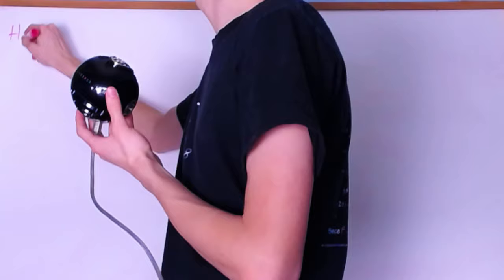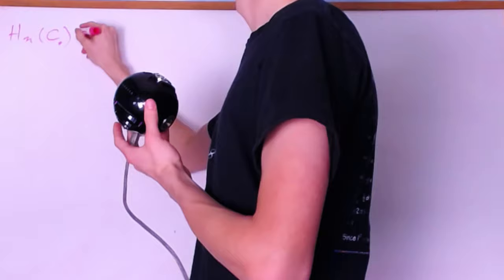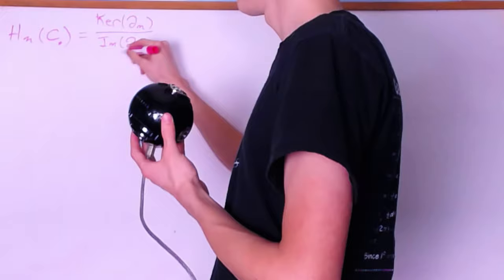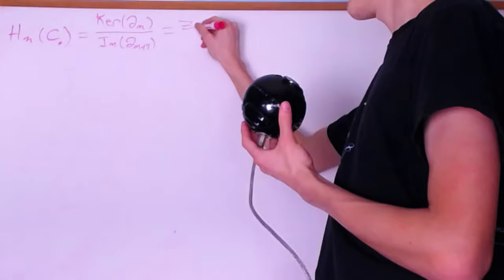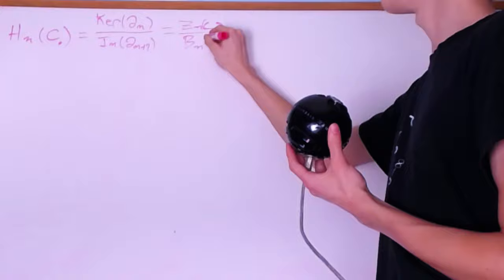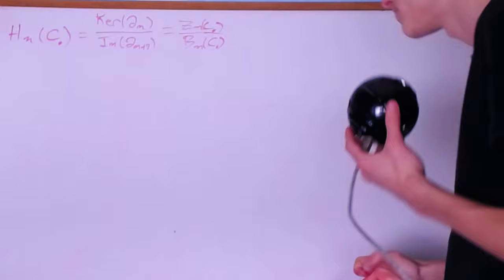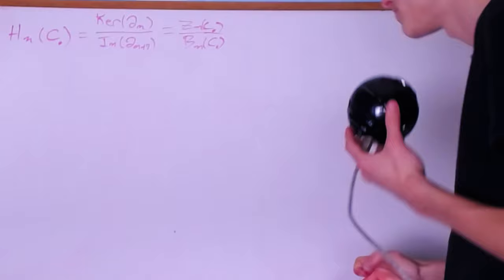First of all, I'm going to remind you that the nth homology of a chain complex is equal to the kernel of del_n divided by the image of del_{n+1}, which I'll notate by Z_n over B_n of the chain complex. So Z_n is the kernel, B_n is the image. Let's go ahead and state the theorem I'll be proving.